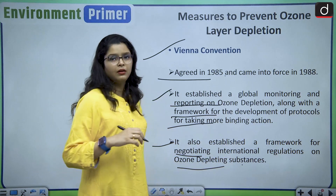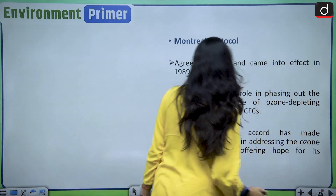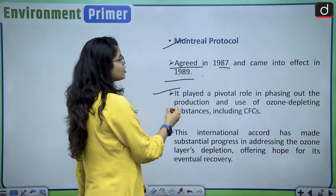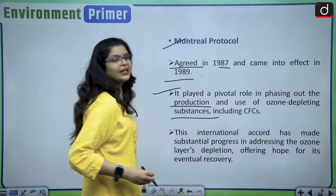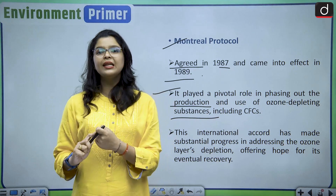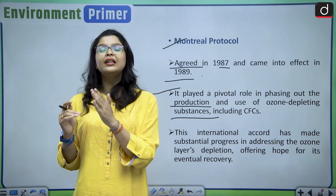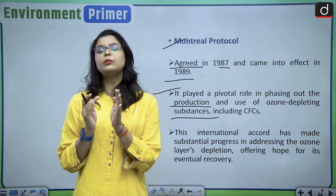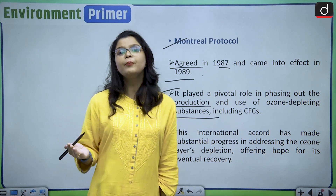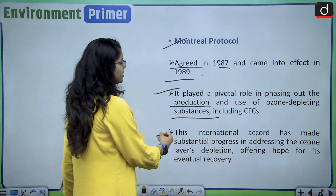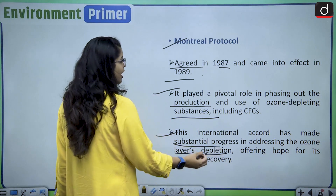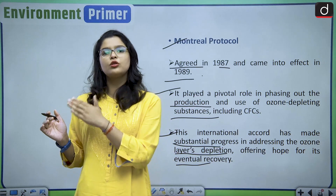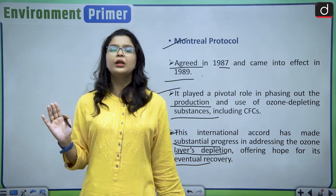Then came the most important legally binding treaty in this regard: the Montreal Protocol, agreed in 1987 and coming into effect in 1989. It played a pivotal role in phasing out the production and use of ozone depleting substances, including chlorofluorocarbons. Parties who are signatory to it are legally bound to phase out the ozone depleting substances, or they will be penalized. This international accord has made substantial progress in addressing the ozone layer's depletion, offering hope for its eventual recovery.